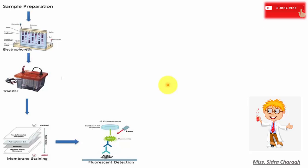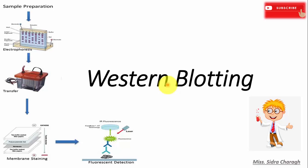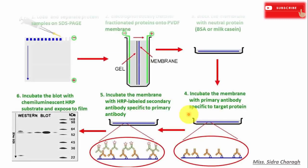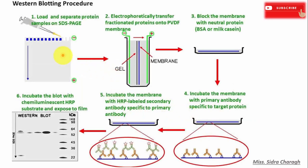In this lecture we will discuss Western blotting. Western blotting is a technique used for the identification of a particular protein from a mixture of proteins. In this method, a labeled antibody against a particular protein is used to identify the desired protein. It is a specific test, also known as immunoblotting because it uses antibodies to detect the protein.